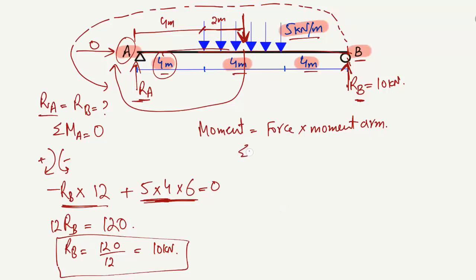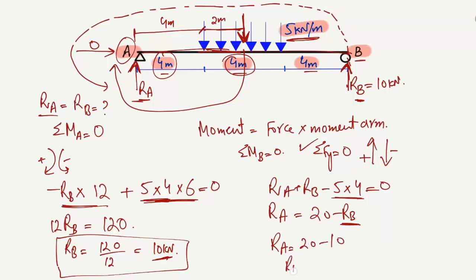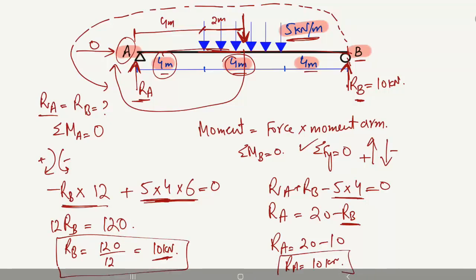We can use either summation of moments at point B or summation of vertical forces equals zero. Using the vertical force equation, upward forces are positive and downward forces are negative. So Ra + Rb − (5 × 4) = 0. Shifting the load to the right: Ra = 20 − Rb = 20 − 10 = 10 kN. So Ra is 10 kN.